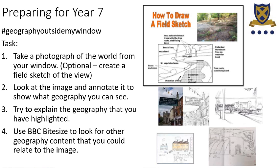We've got a guide on the right showing how to draw a field sketch, along with some examples. They don't have to be great pieces of art — just simple drawings showing the key things you want to talk about. You're going to look at the image, whether that's your photograph or your sketch, and annotate the geography that you can see — things you've learned about in primary school. Label them, then explain underneath why each is related to geography. You can also use BBC Bitesize to find other geography content to relate to the image, and think about the year 7, 8 and 9 topics listed.